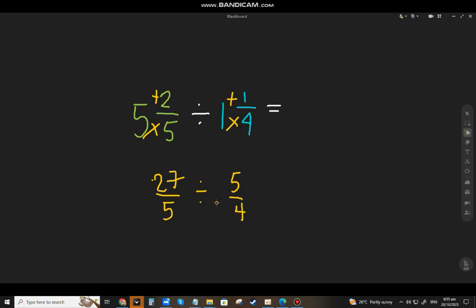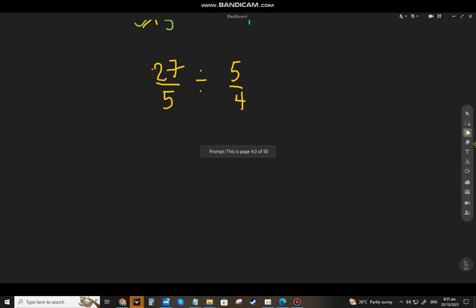In division, we take the reciprocal of the divisor, that will be 4 over 5. Change the division sign to multiplication and copy paste the 27 over 5 as the dividend. Then we can multiply 27 times 4.